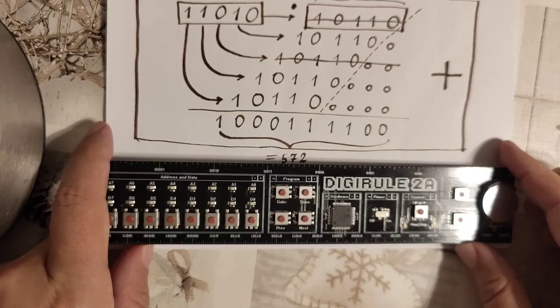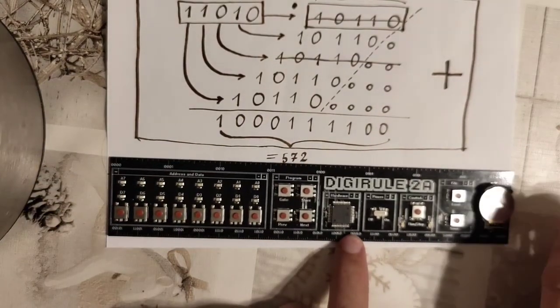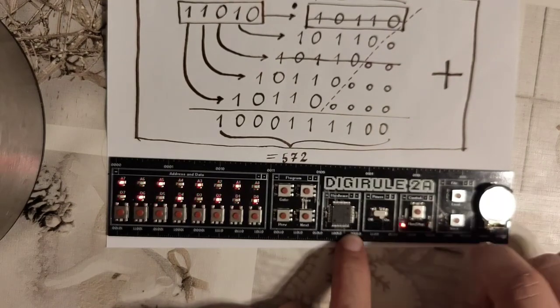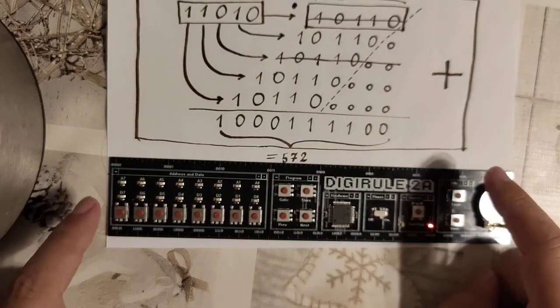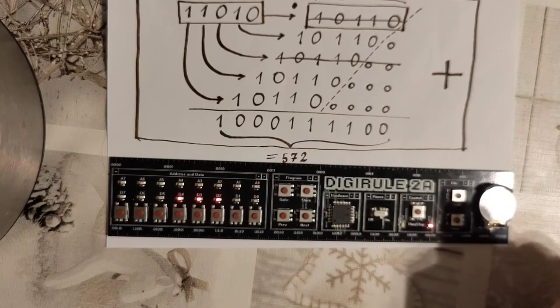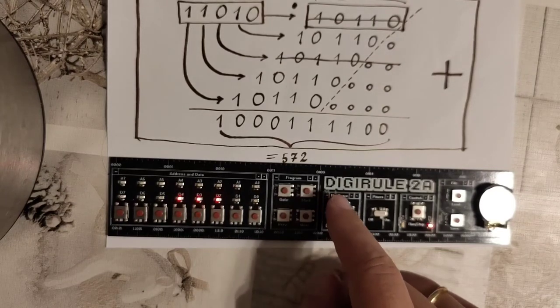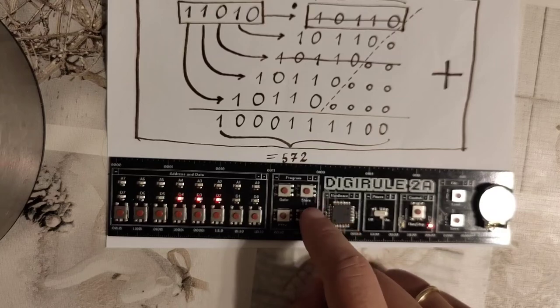I have of course already pre-charged that in my trusty Digirule 2a and when I turn it on, add a nice animation and load the program from d7 which is exactly the program you'll find in the GitHub link here. You can see already the first jump instruction in order to get over my variable declaration space.